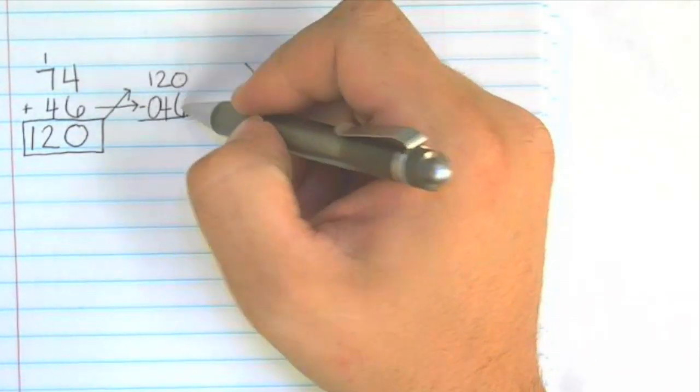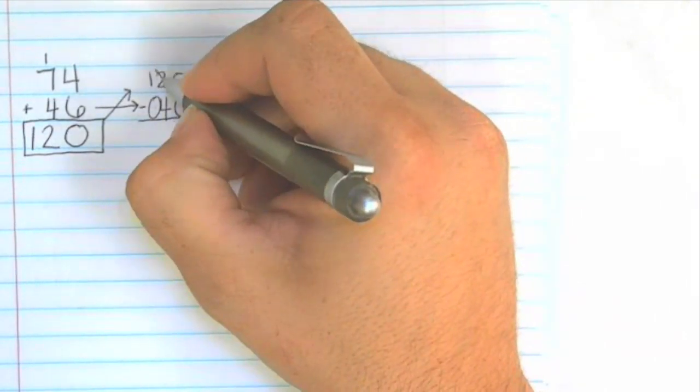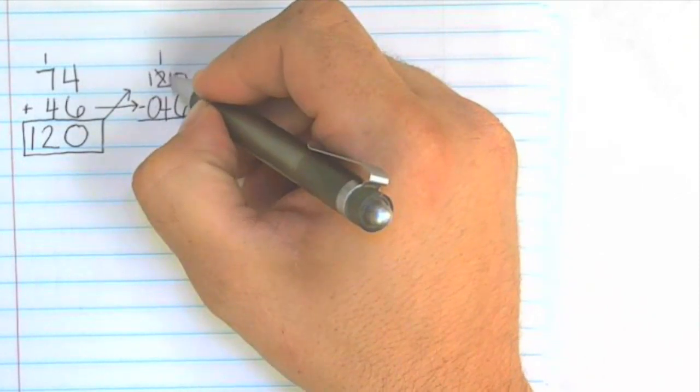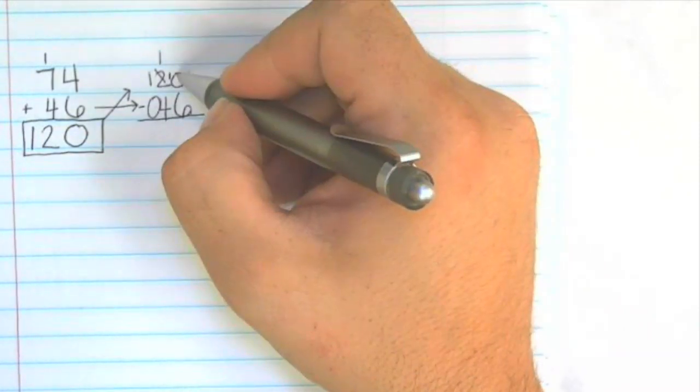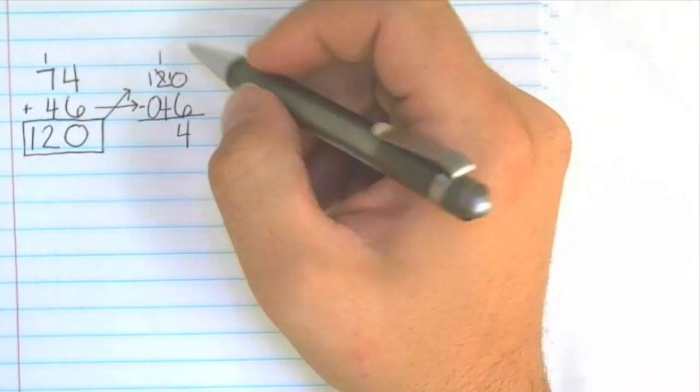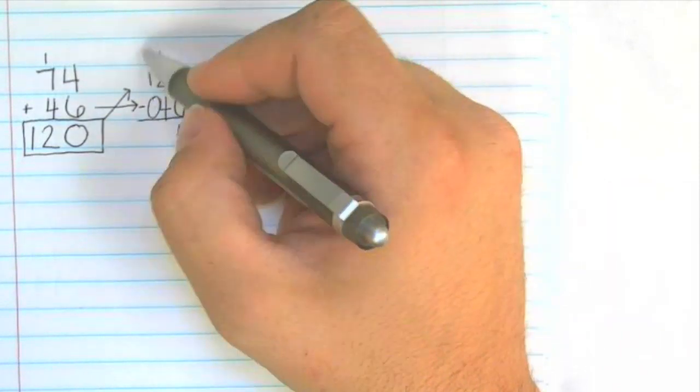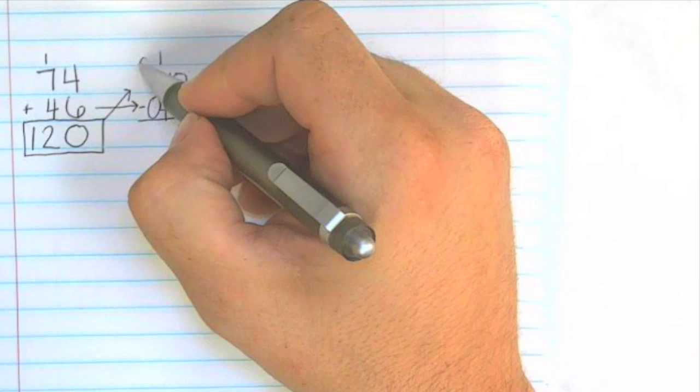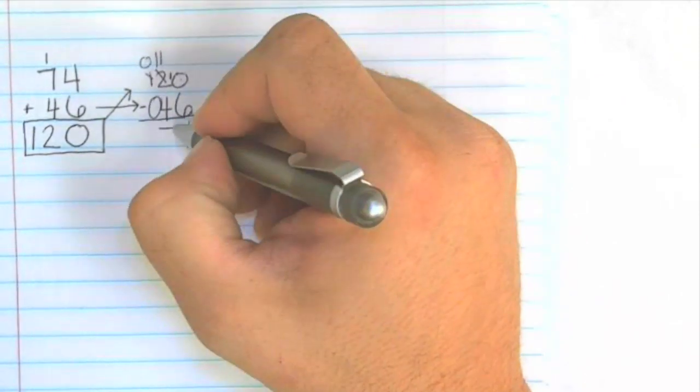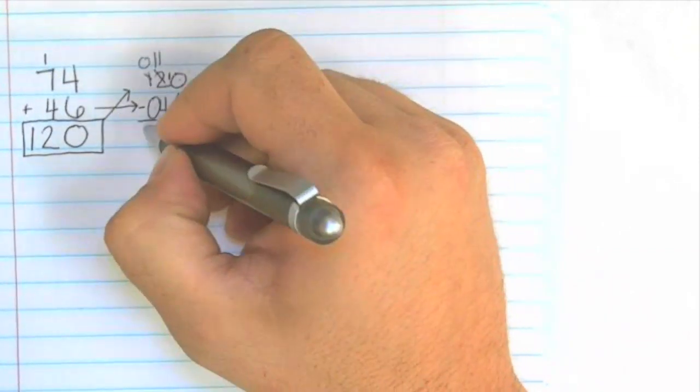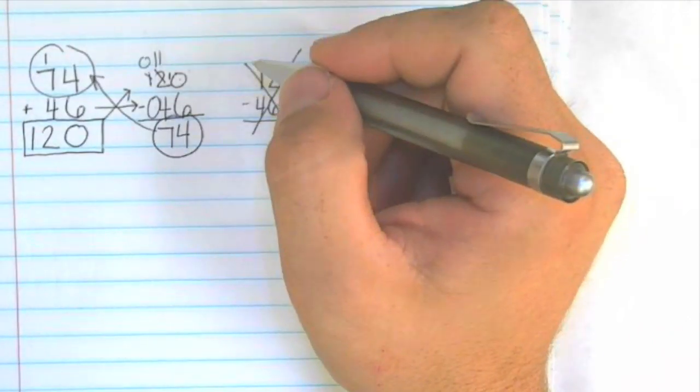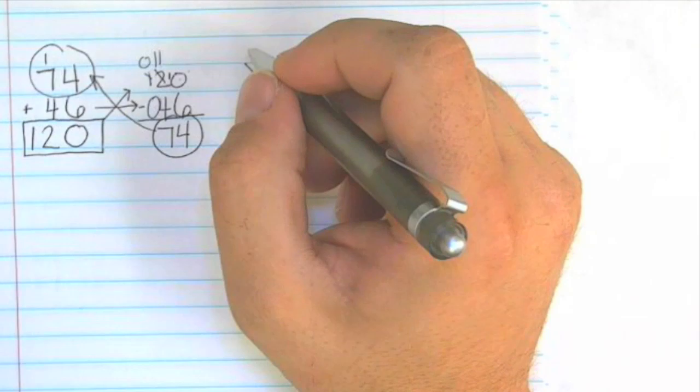Zero minus six we can't do so we borrow from this two. The two becomes one and the zero becomes ten. Now ten minus six is four. One minus four we can't do so again we'll borrow from this one which then becomes zero and this one becomes 11. 11 minus four is seven. 74 here is the same as 74 here so using the inverse operation we learned that we have this problem correct.